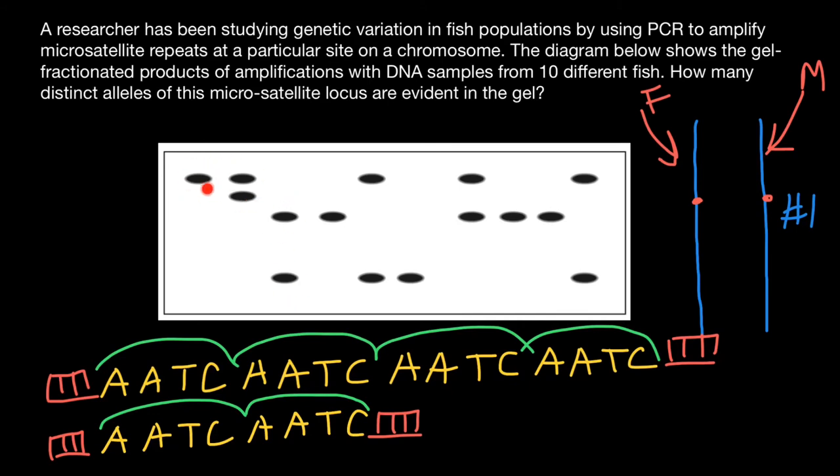That means that here, we actually amplified at the same locus two microsatellites of the same size. That's why we see only one band. We have microsatellites from both chromosomes, but their size is the same. And here we have two bands, which means that two microsatellites at the same locus inherited from different parents have different sizes.